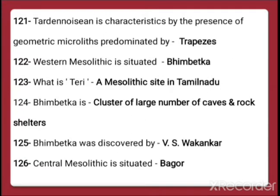Question 123: Terry is a Mesolithic site in Tamil Nadu. Terry is basically a desert area famous for special types of sand dunes and red sand. Question 124: Bhimbetka is a cluster of a large number of caves and rock shelters — that is, a group of caves with many rock shelters.